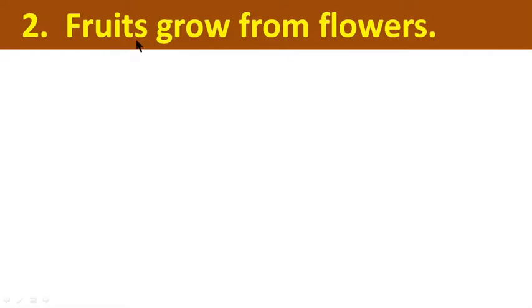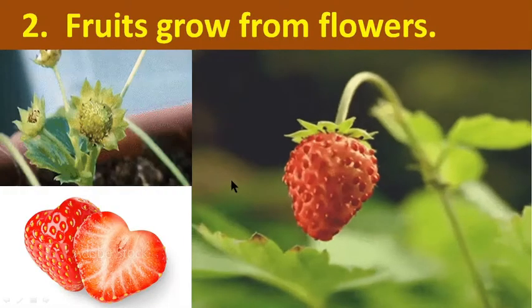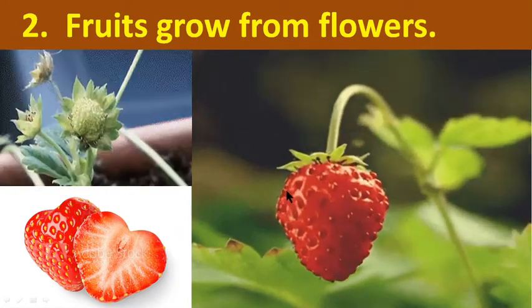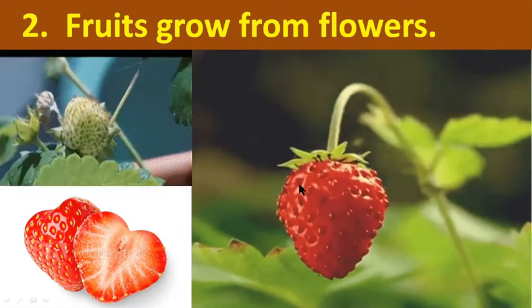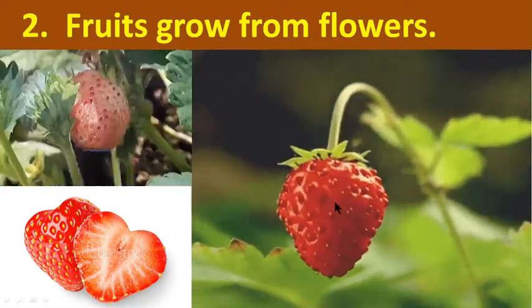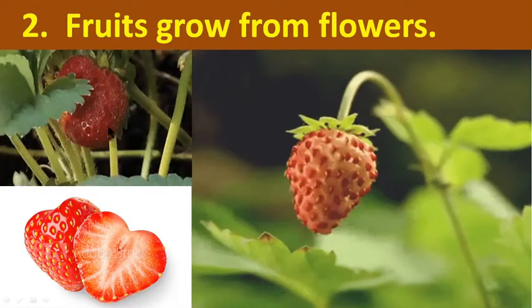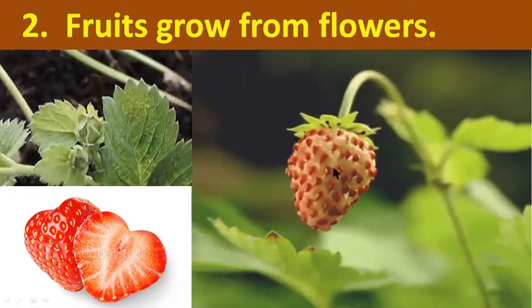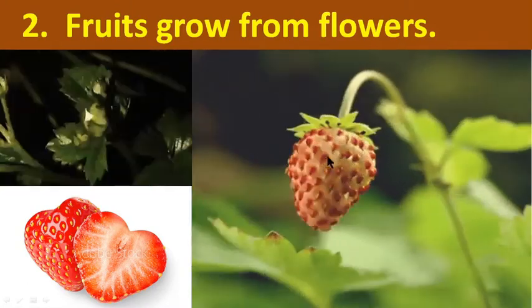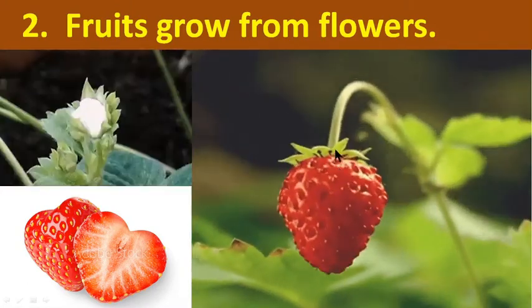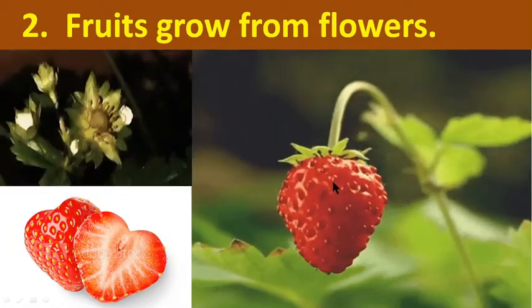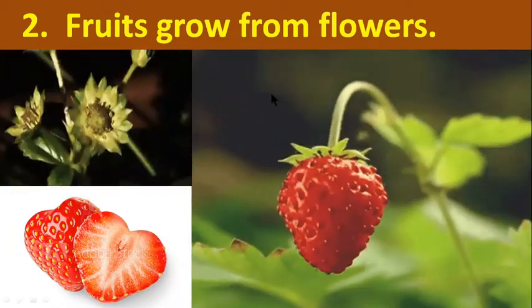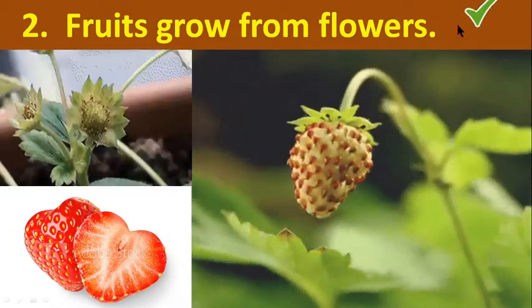Number two: Fruits grow from flowers. If we observe, we can see that this fruit is growing from a flower — the flower is turning into fruit. So this sentence is right.